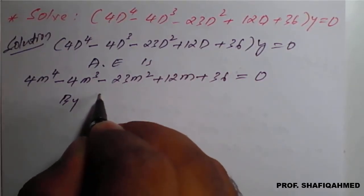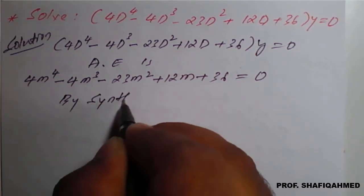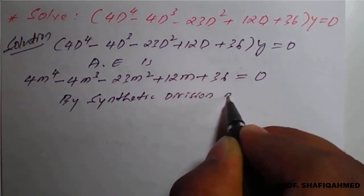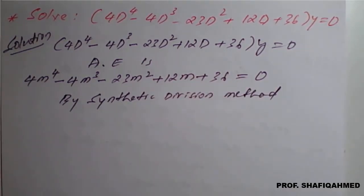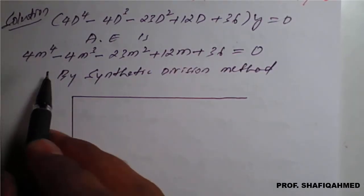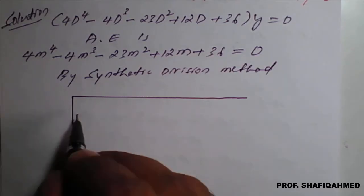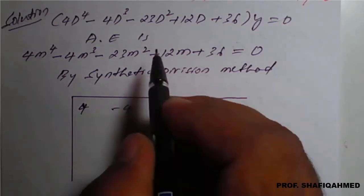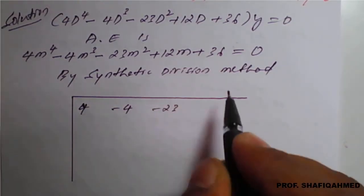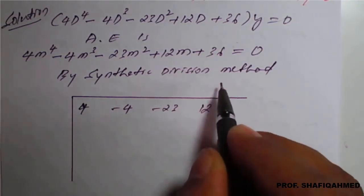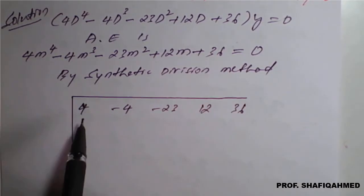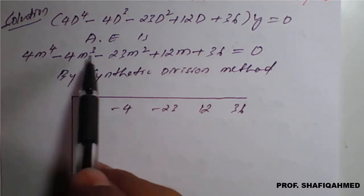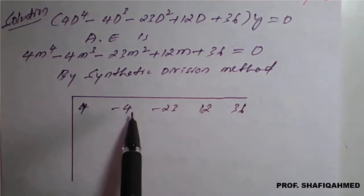By the synthetic division method, first we have to take the coefficients. Coefficient of m raised to 4 is 4. Coefficient of m cubed is minus 4. Coefficient of m squared is minus 23. Coefficient of m is 12. And the constant is 36. They should be written in decreasing order of power. If any power is missing, we consider that part as 0.